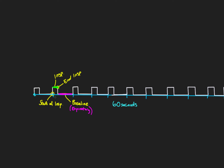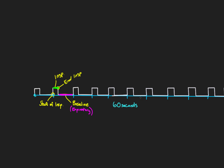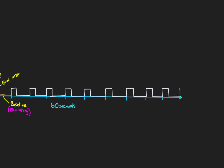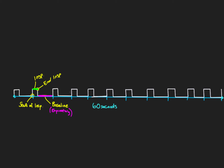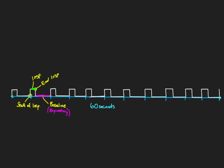Looking at this 60-second period, if I scroll across you can see a series of breaths that are all the same. These square breaths represent our pressure waveform. In this 60-second period we have one, two, three, four, five, six, seven, eight, nine, ten, eleven, twelve — okay, twelve breaths.